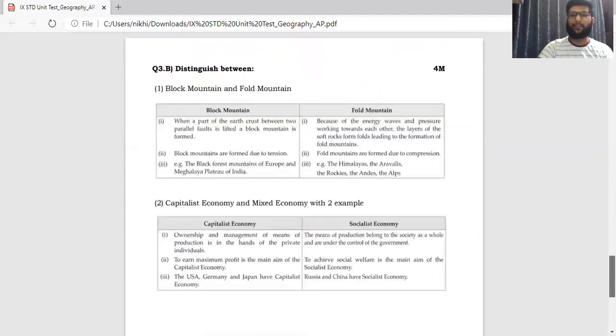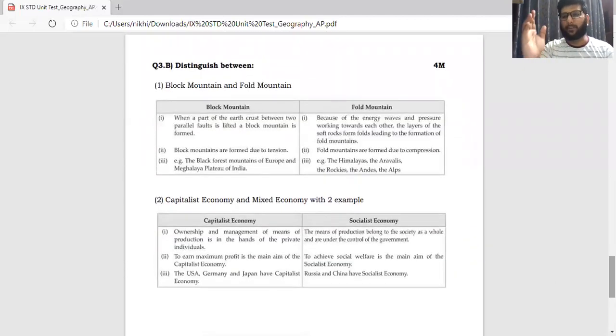Alright, let's come to the next question. A very simple and yet a very scoring one. Distinguish between. First is the block mountain and the fold mountain. So when I say it's for two marks, usually two to three points is more than enough. So you write down two points. And third one being the example, it is sufficient.